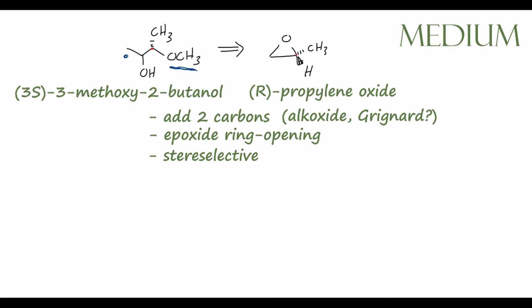For this synthesis, I think it's most useful to start from the starting material instead of going backwards. Our R-propylene oxide is an epoxide, so we can perform a ring opening using a nucleophile. We can open this ring in either basic or acidic conditions. In basic conditions, we have some generic nucleophile NUC⁻, which opens the ring in an SN2 process — from the less sterically hindered carbon — giving us a product where the nucleophile has bonded to the left-hand carbon.